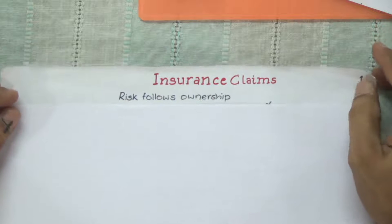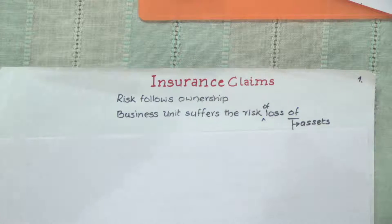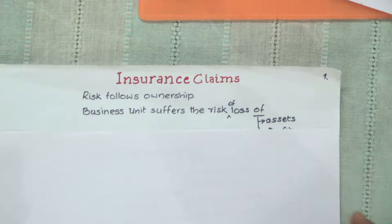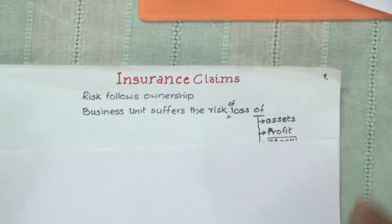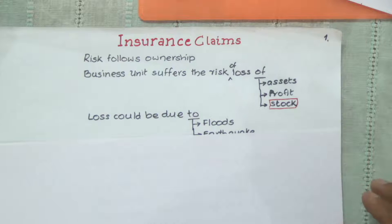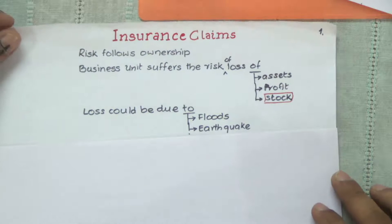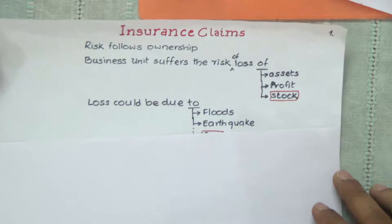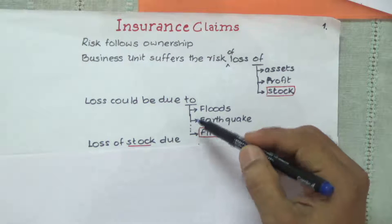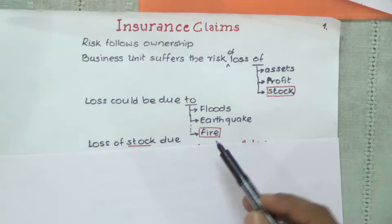Whatever we own, we can lose. The business unit usually owns — and which it can lose — are the assets, the profit, and the stock. These are the things it owns and could lose. The loss could be due to floods, earthquake, tsunami, or various reasons, and it also could be due to fire.